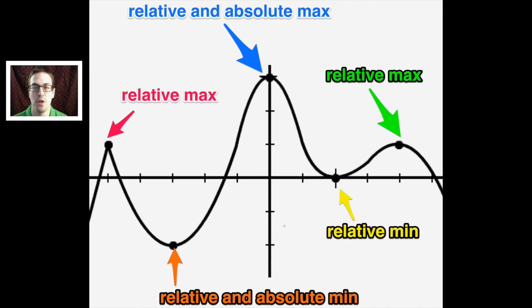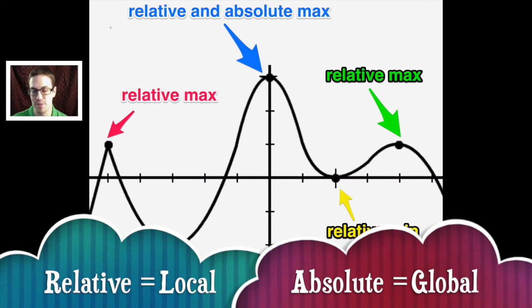So this is all about relative and absolute mins and maxs or relative and absolute extrema. Now, you can have it where instead of being called relative extrema, sometimes it's called local. And like I said before, sometimes instead of absolute, it's called global. So relative and absolute have other names. Relative can be local as well or absolute can be called global.